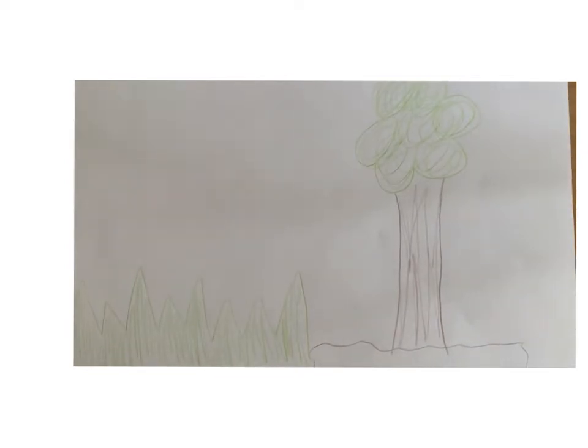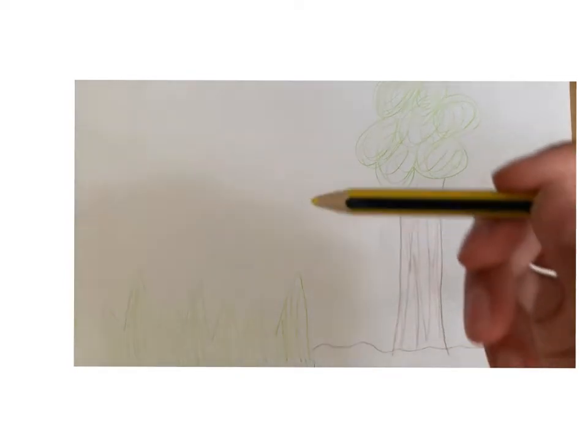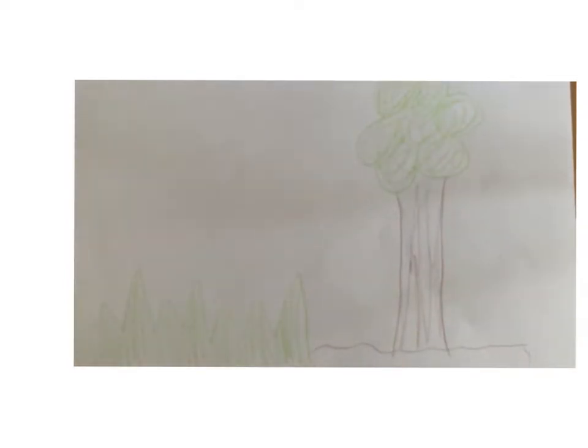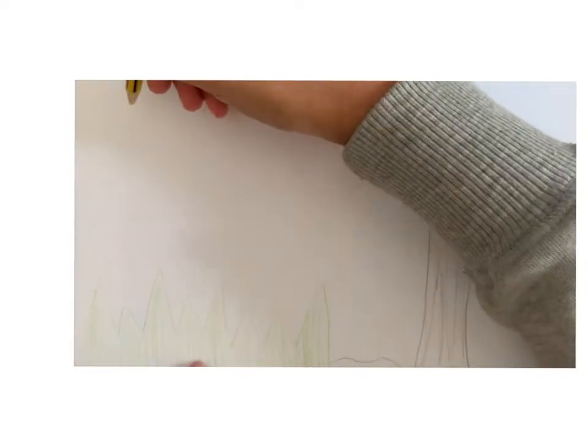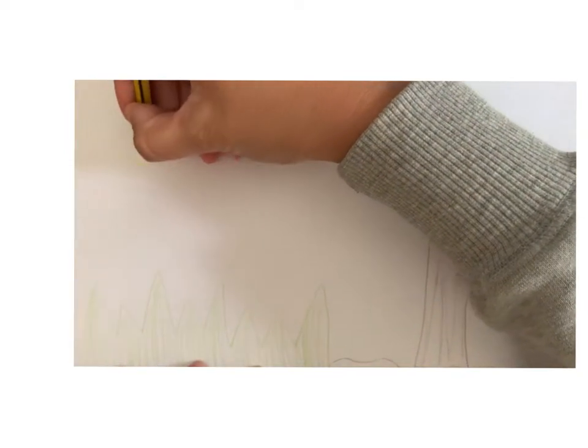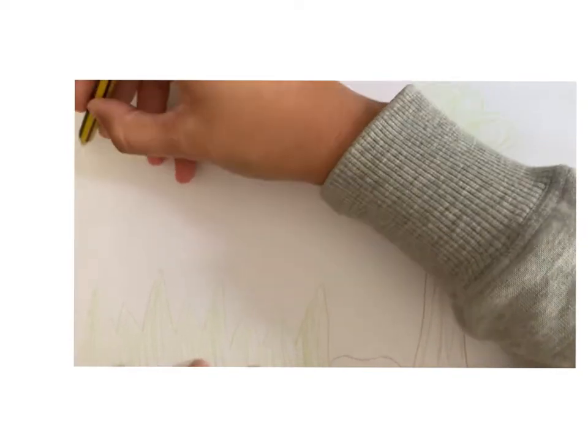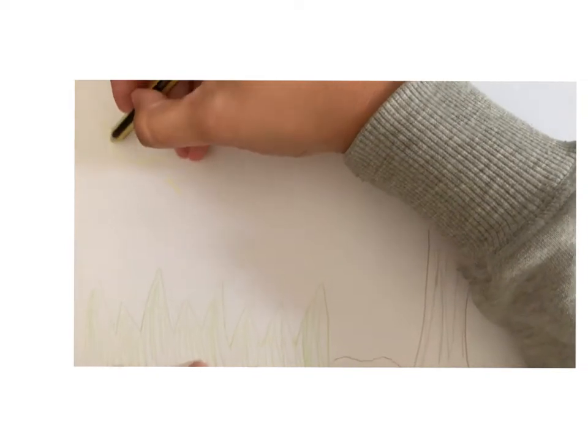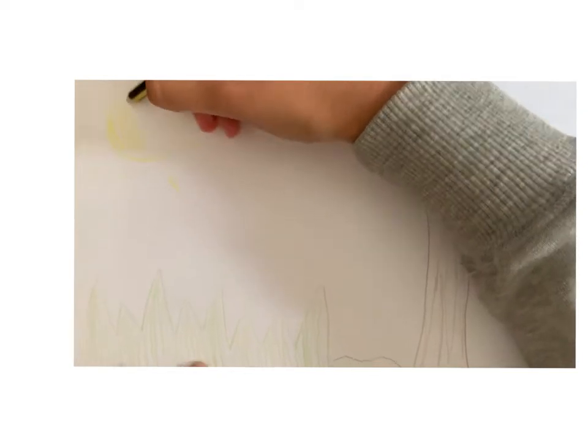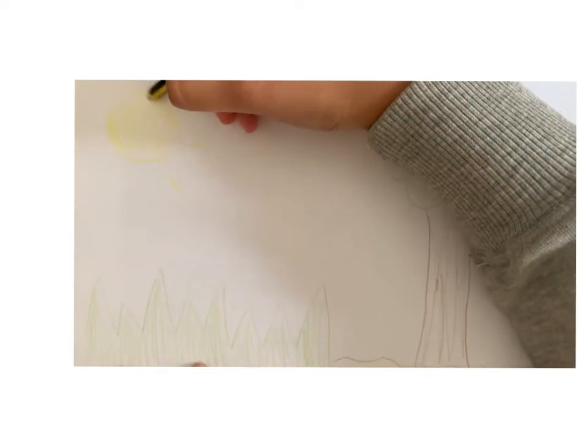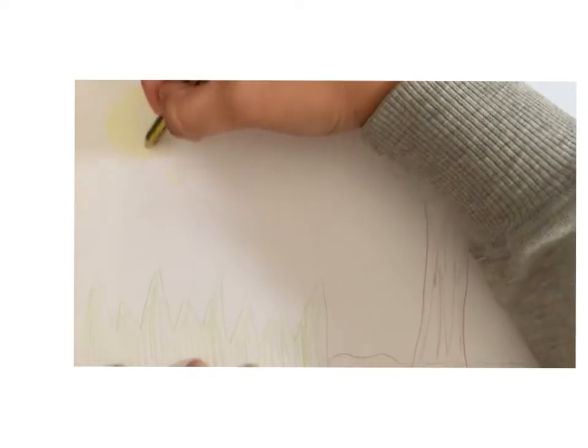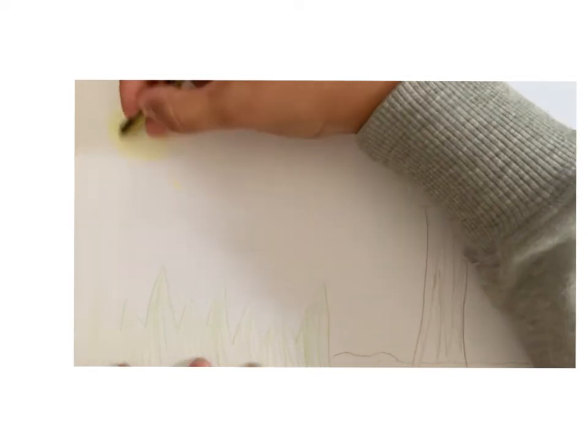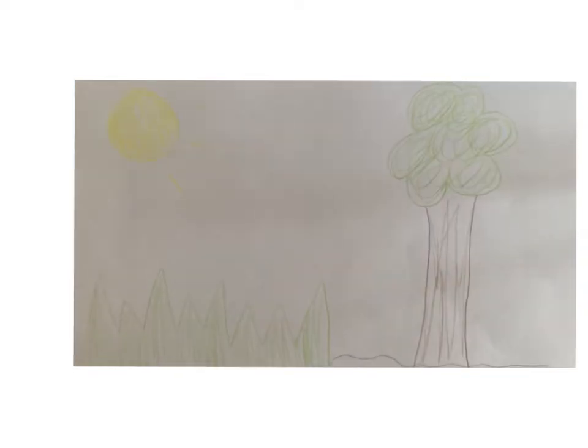The next thing I'm going to add is yellow. Can you think what it might be? It's the sun. Bright yellow sun in the sky. My garden needs the sun to help it grow. There we go.